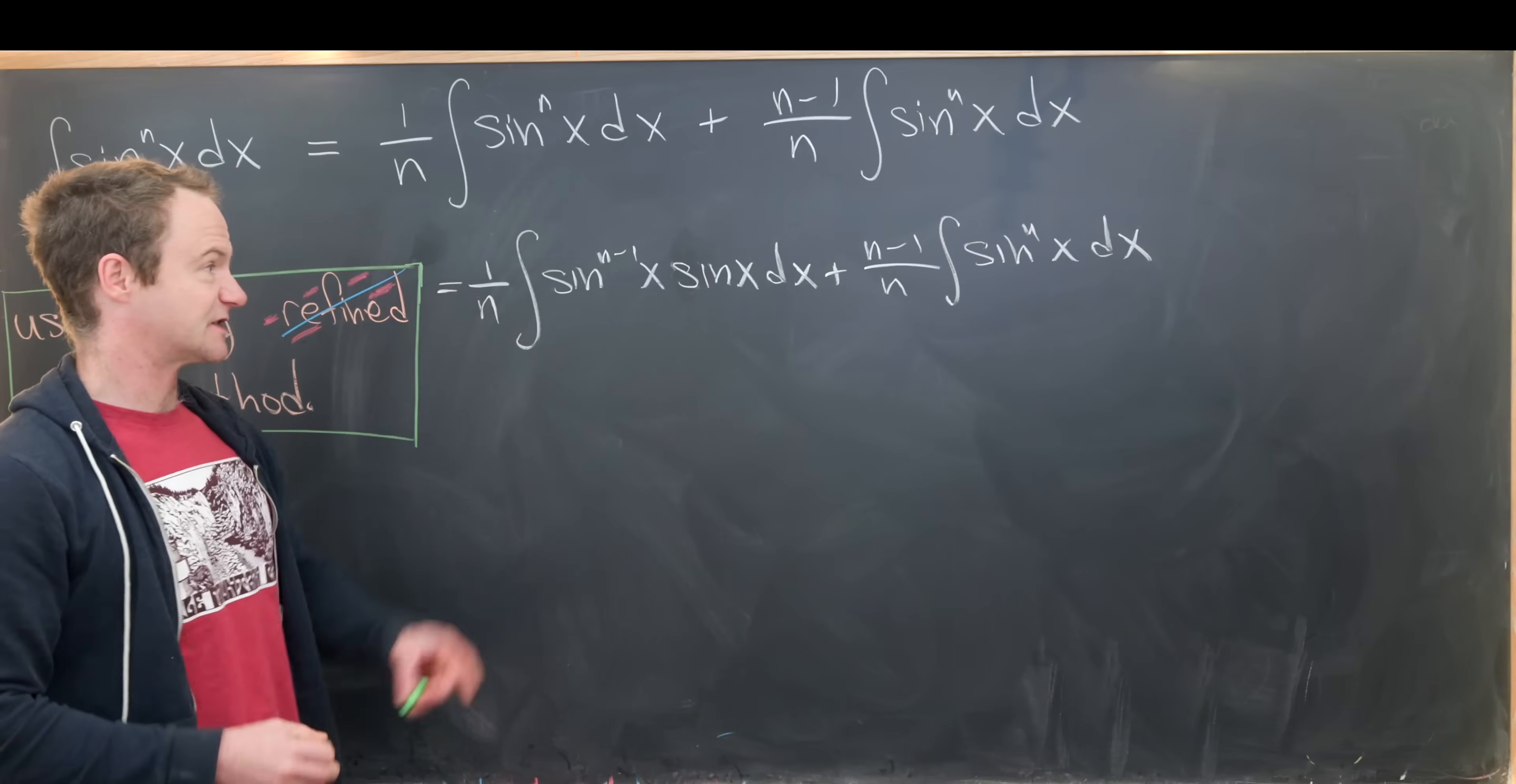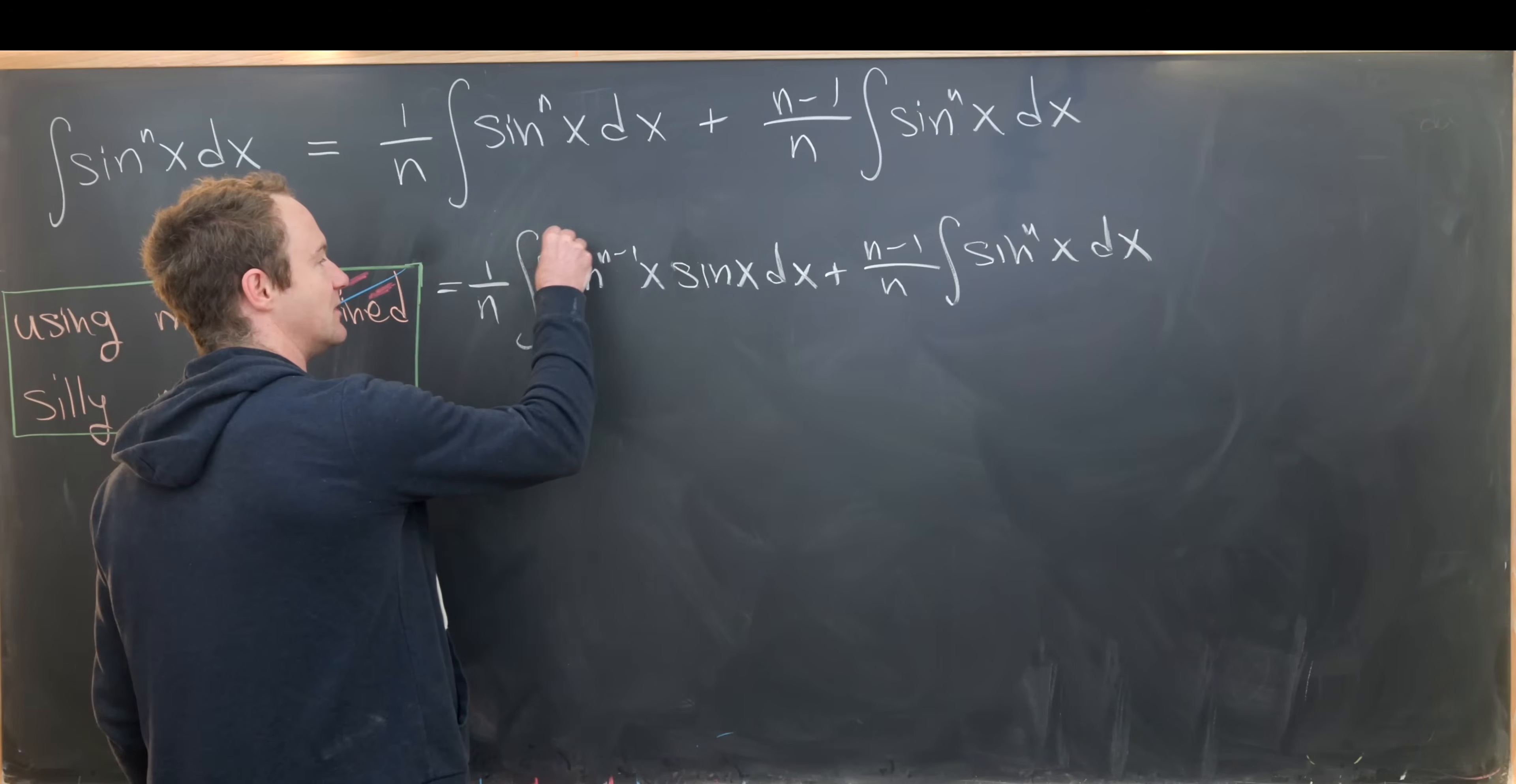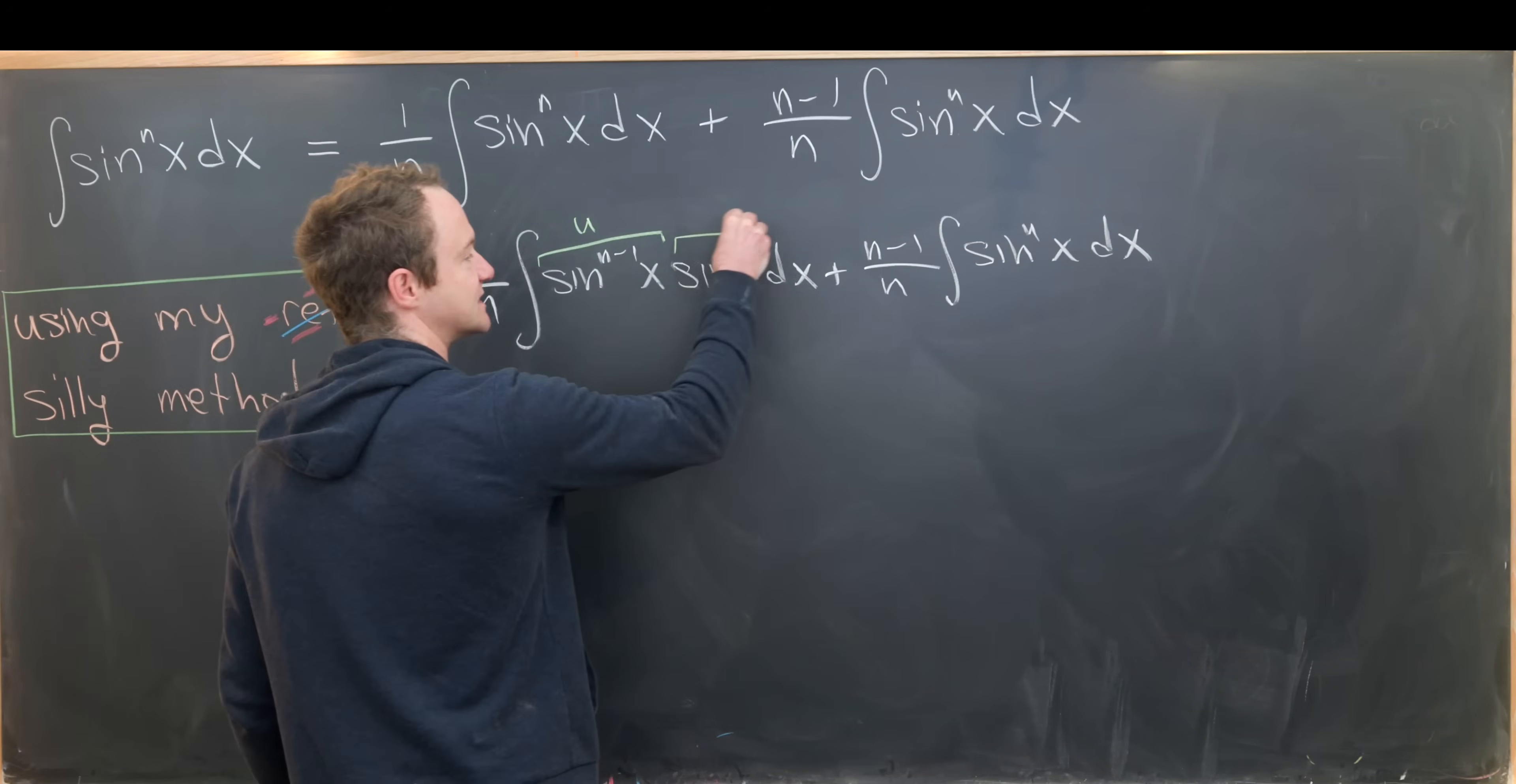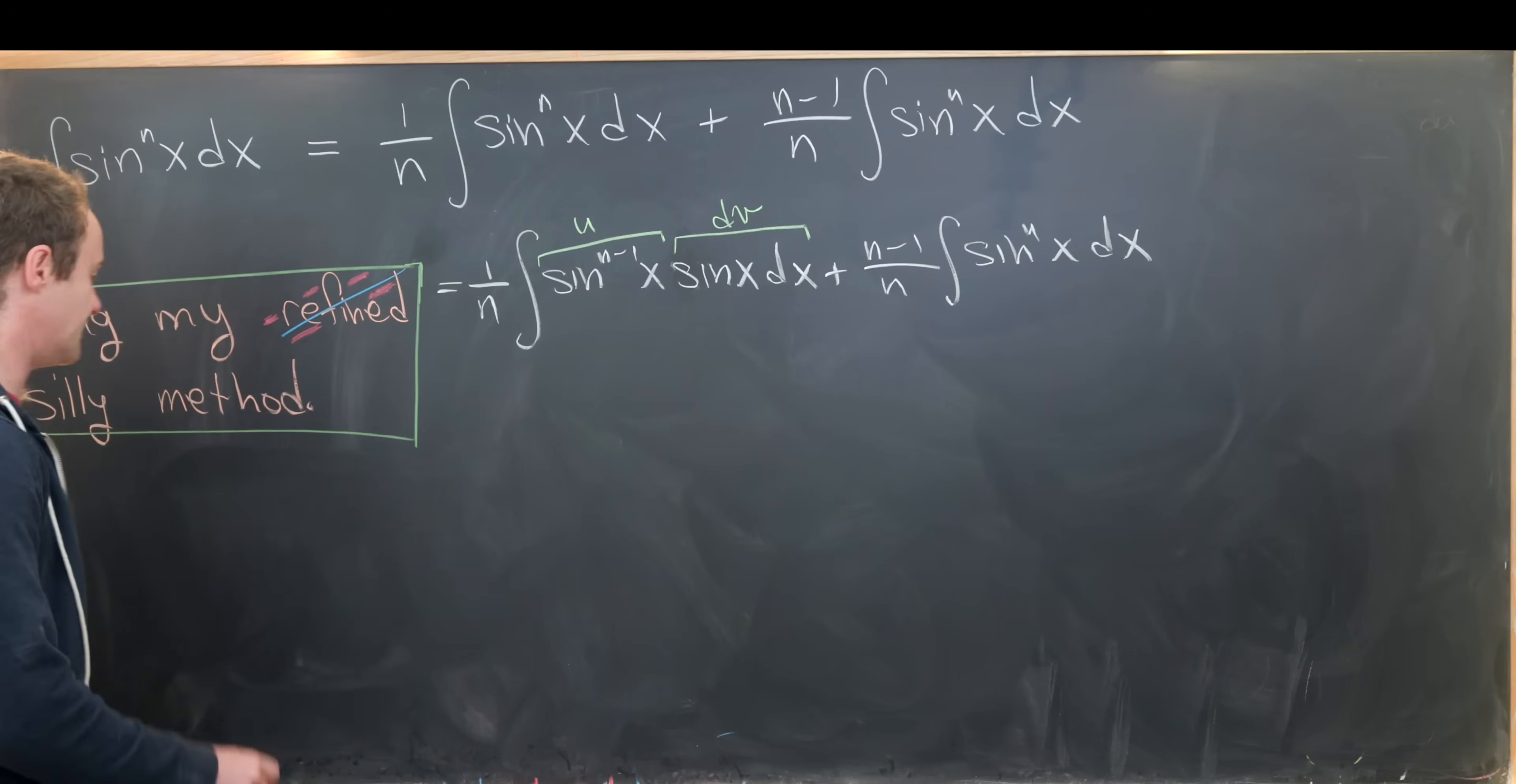And now we're set up to attack this first integral with integration by parts. So maybe we would set this equal to u, and then we would set all of this bit equal to dv. But now using substitution and the chain rule, we see that du must be equal to n minus one times sine to the n minus two x times cosine of x dx, because the derivative of sine is cosine. And then furthermore, if dv is sine x dx, then we know that v is equal to negative cos x dx.